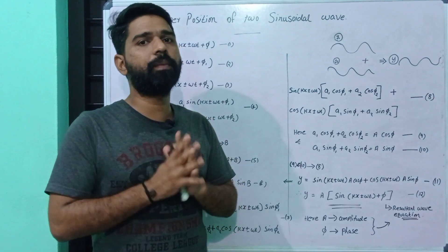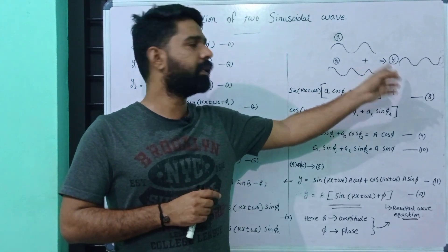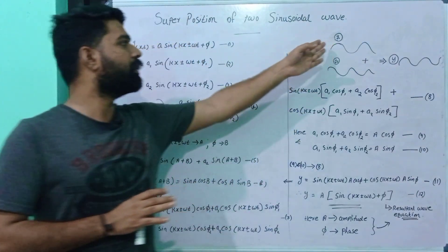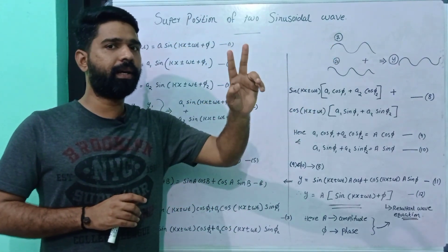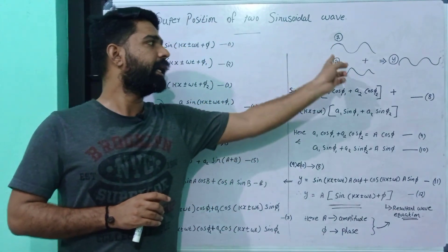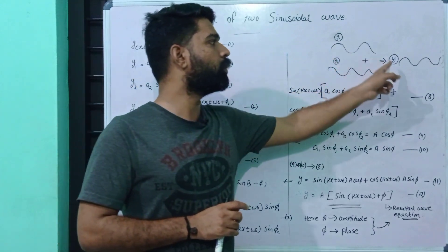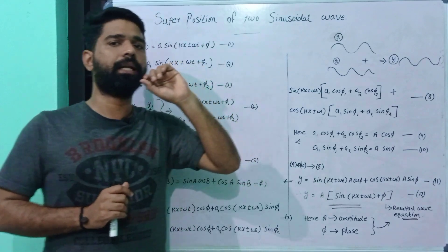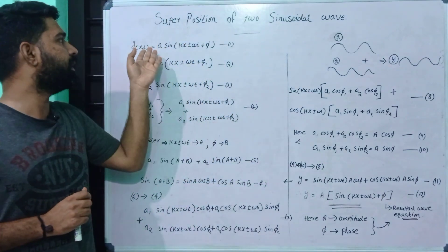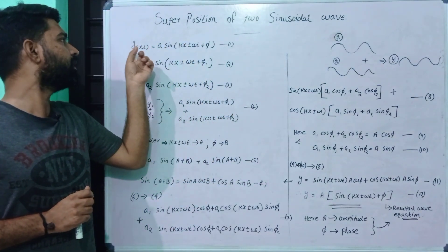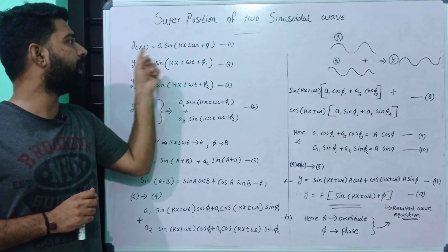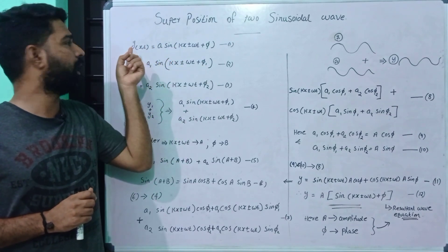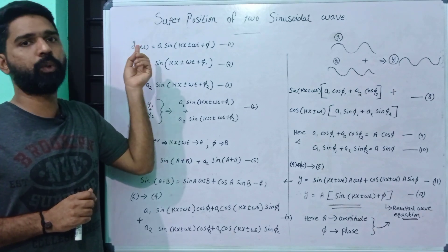First, we are going to consider the resultant wave. We are going to consider two waves. If we are going to consider the sinusoidal wave, y(x,t) is equal to A sin(kx ± ωt + φ). Now, we are going to consider the wave equation y with respect to position x and time t.